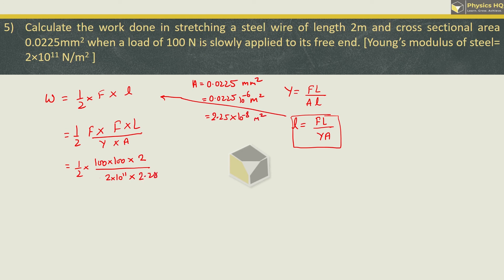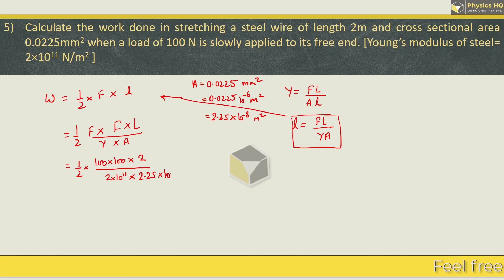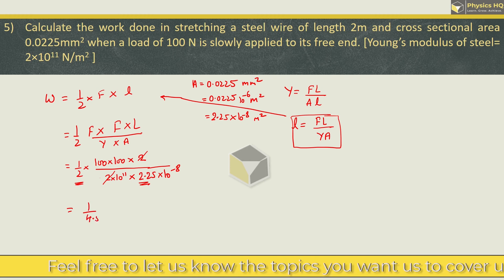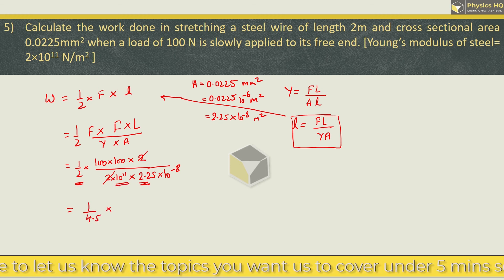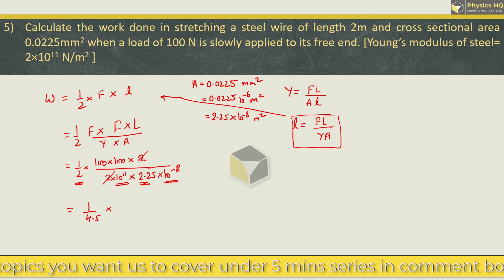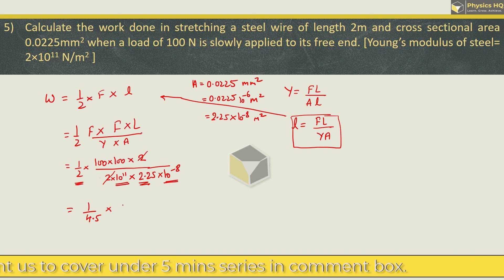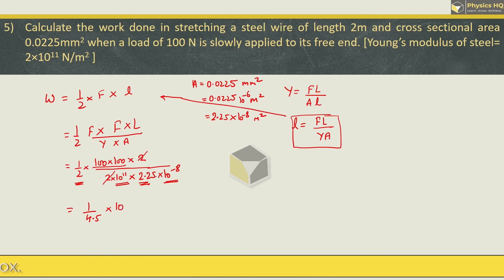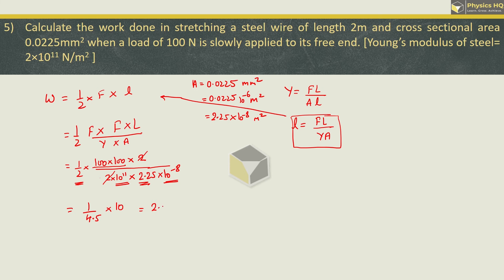Let us put it over here, 2.25 into 10 raised to minus 8. This 2 will cancel here. 2 into 2.25 will give you 1 by 4.5. And this 10 raised to 11 and 10 raised to minus 8 will become 10 raised to 3. Going up it will become 10 raised to minus 3. And in the numerator this 100 into 100 is 10 raised to 4. 10 raised to 4 and 10 raised to minus 3 will give us 10. When you divide 10 by 4.5 you will get the work done as 2.222 joules. Hope you all understood this.